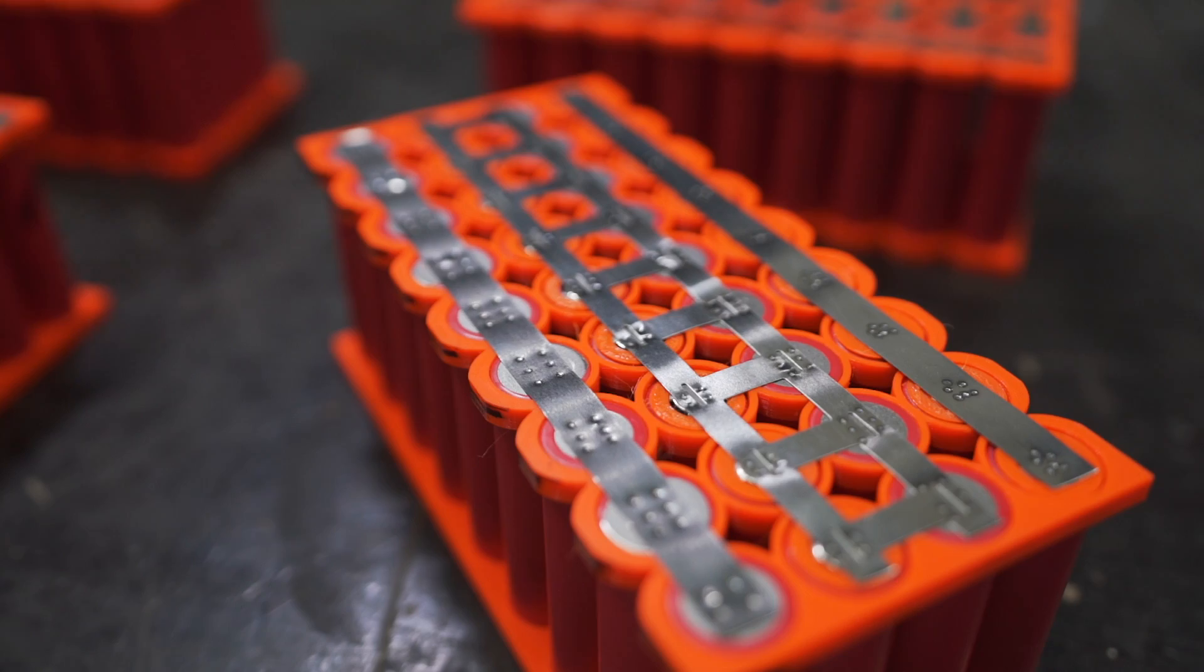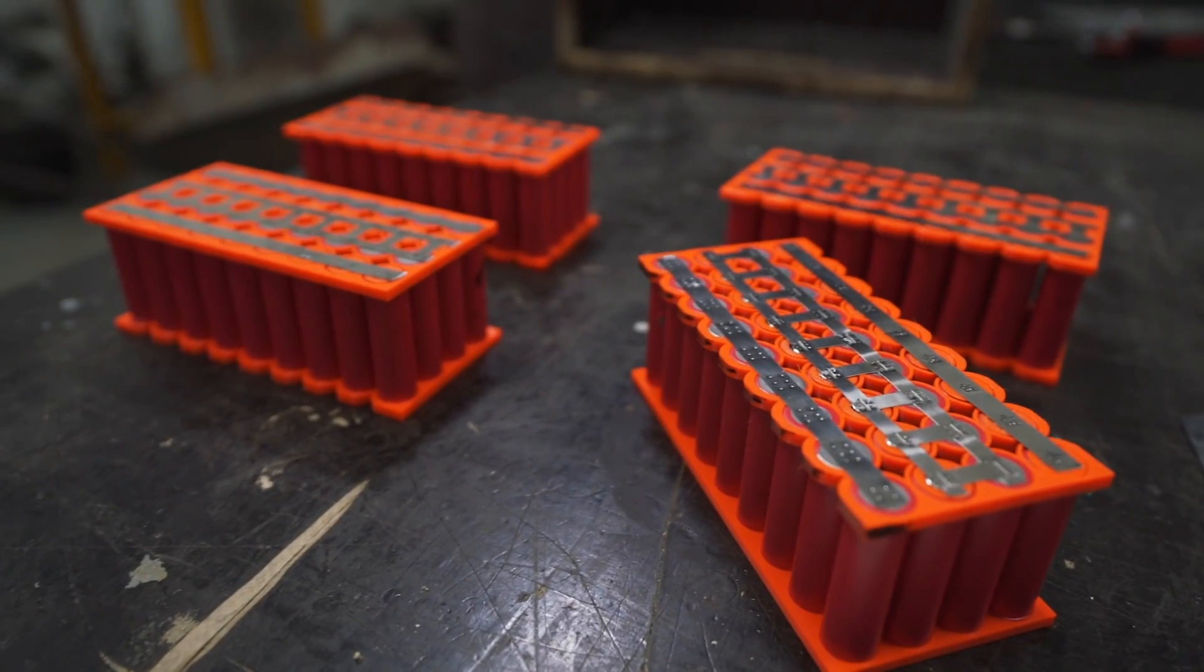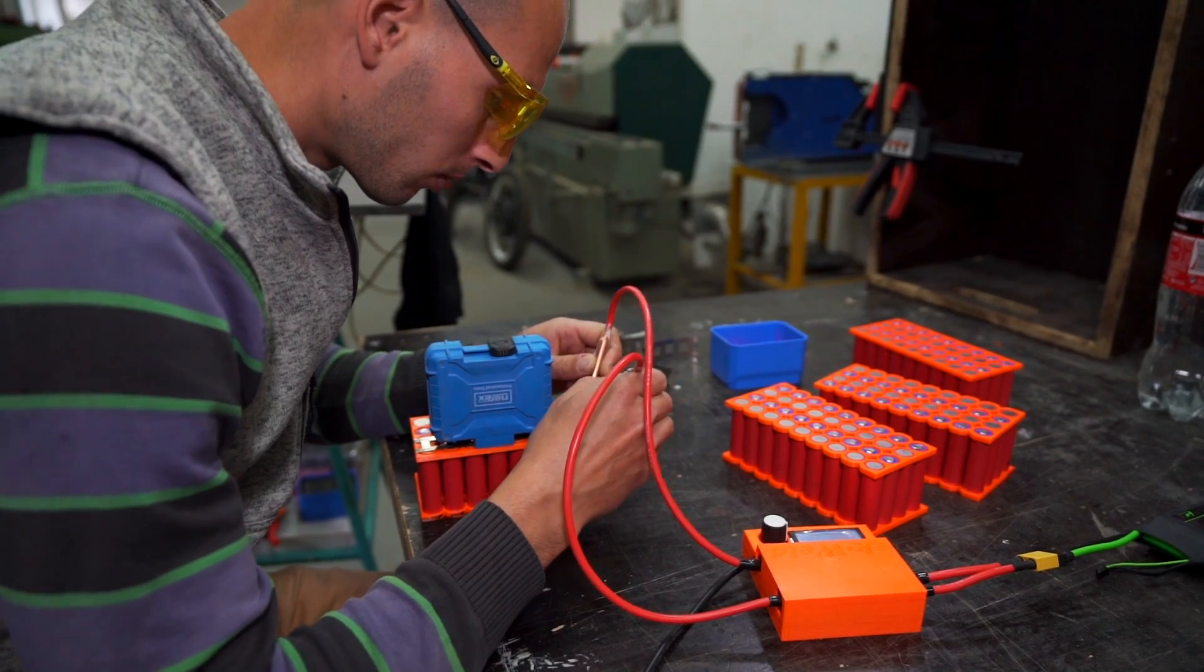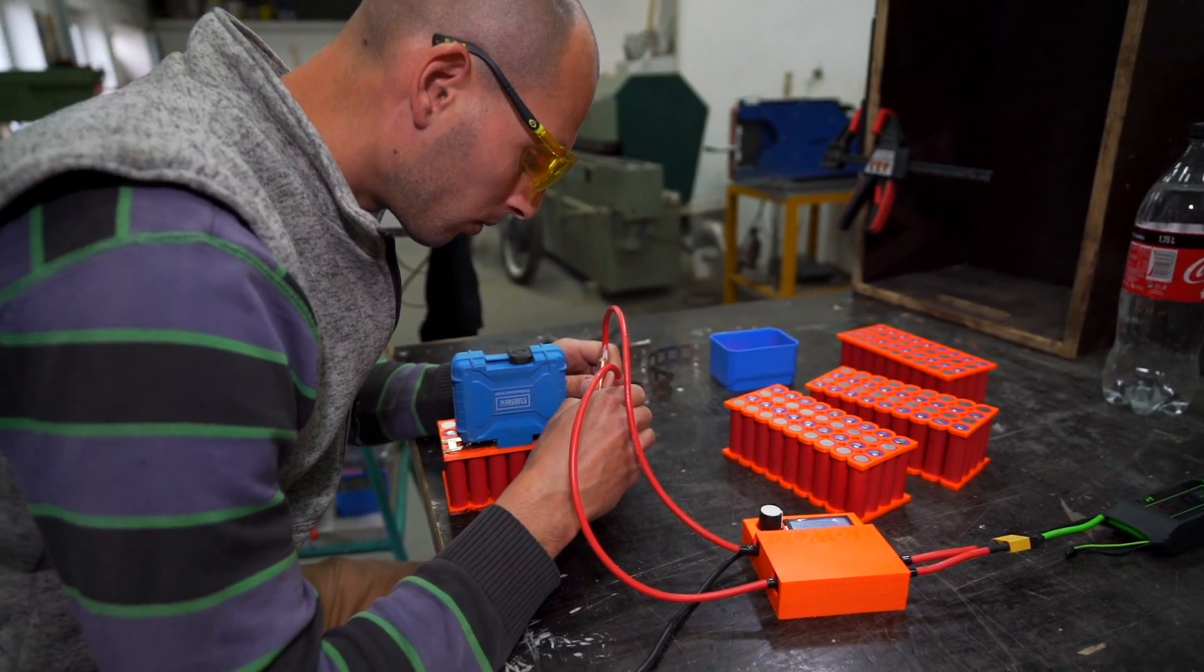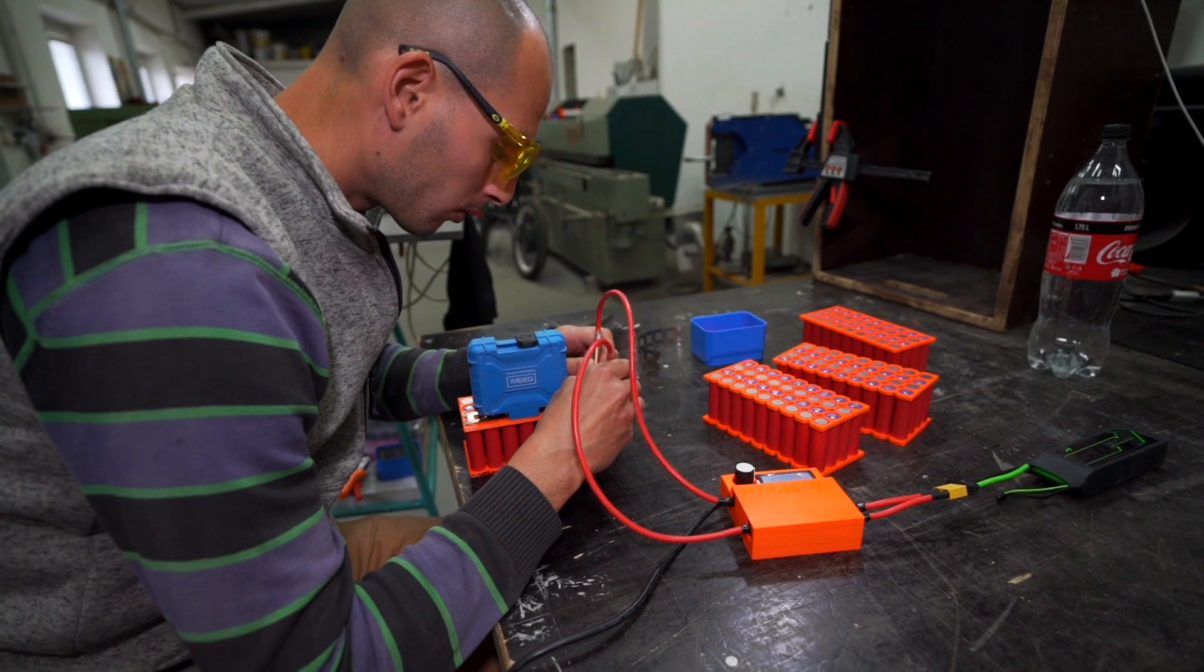Don't forget that for high drain batteries, nickel strips might not be enough. So in this case, you need to calculate the thickness of the material and calculate how much drain you want to be taking from the batteries. And accordingly, you need to design bus bars or you need to design the amount of nickel mass to distribute that current flow efficiently without overheating and stressing the entire system.